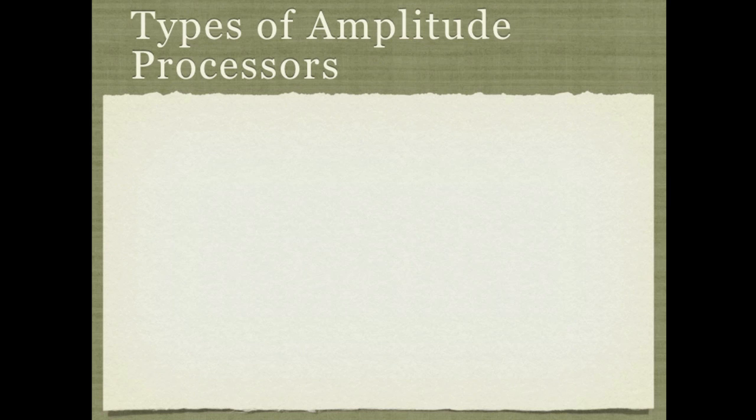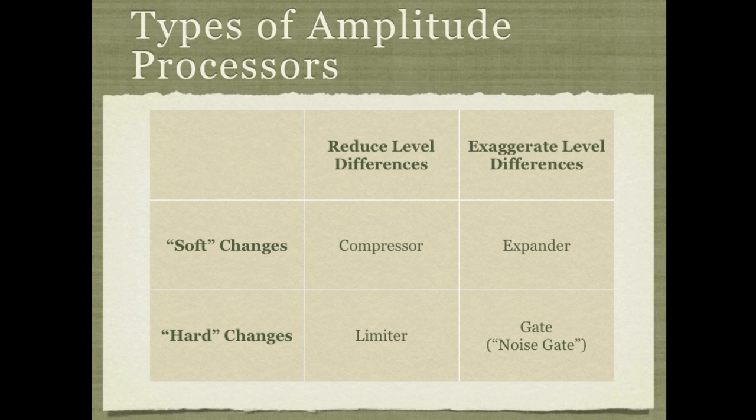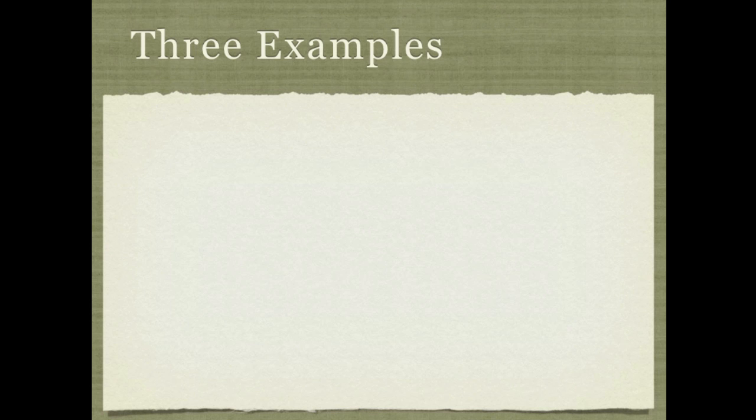So there are four main types. There's the compressor, the limiter, the expander, and the gate. These have some similarities and differences to each other that are best shown in a chart like this. So you can see we have two top headings of the columns. There's reduce level differences and exaggerate level differences. Under reduce level differences, you'll see we got the compressor and the limiter, and under exaggerate, we've got the expander and the gate. And then on the left here, I've labeled soft changes and hard changes, and the compressor and expander, those both make less of a difference to the sound than the limiter and the gate. And now you can hear the thunder. That should be fun.